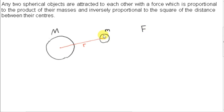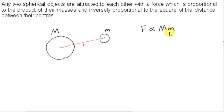Let F be the force between these two spherical masses. F is proportional to the product of the masses, so let one mass be called big M and the other mass little m. This means that if we double any of these two masses, we will double the force.